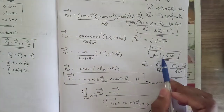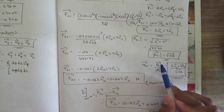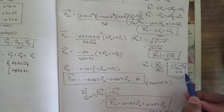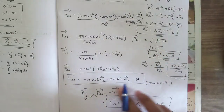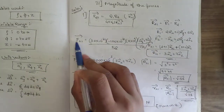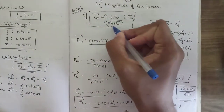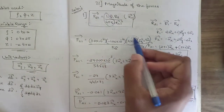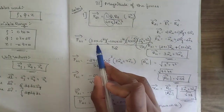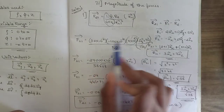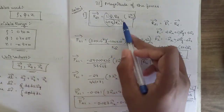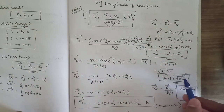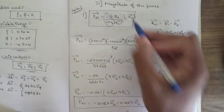The unit vector r̂21 = r21 / |r21| = (3ax + 7az) / √58. Now substituting into the Coulomb's law formula: F21 = (9 × 10⁹) × (30 × 10⁻⁶ × minus 100 × 10⁻⁶) / (√58)² × (3ax + 7az) / √58. Since (√58)² = 58, the square and root cancel, leaving 58 in the denominator.